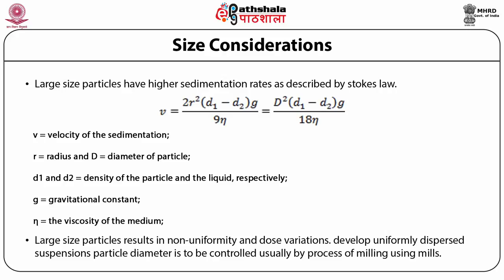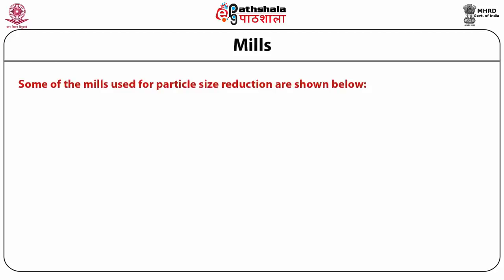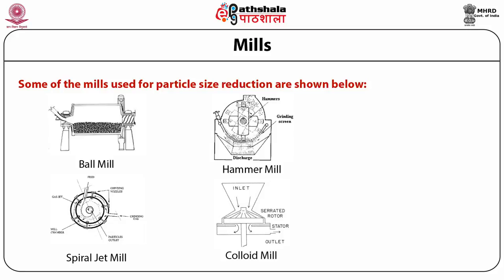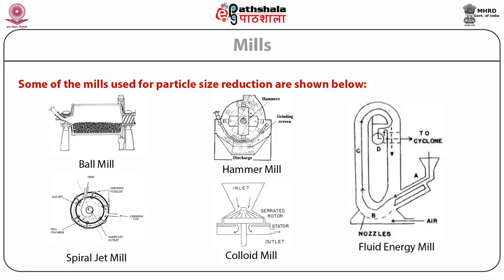To develop uniformly dispersed suspensions, particle diameter is to be controlled, usually by the process of milling using mills. Some of the mills used for particle size reduction include ball mill, hammer mill, spiral jet mill, colloid mill, and fluid energy mill.